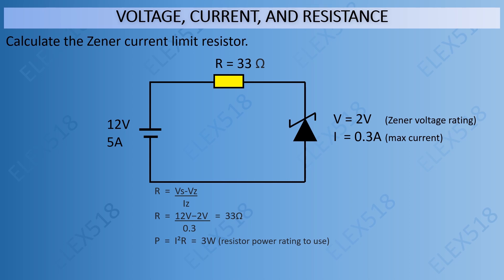The power rating of the resistor we are going to use, calculated as I squared R, will be 3 watts.